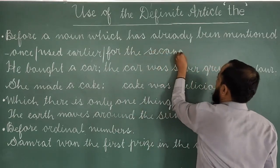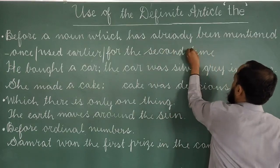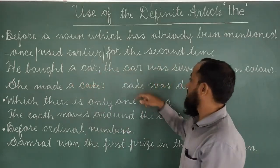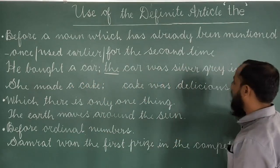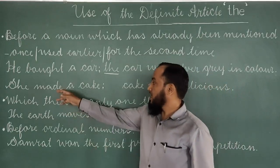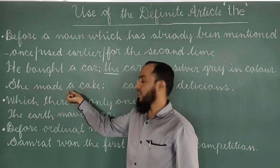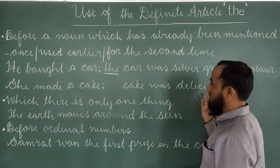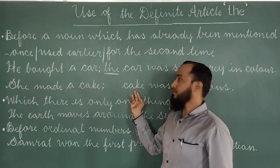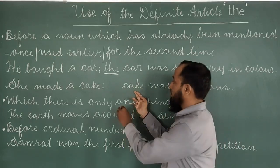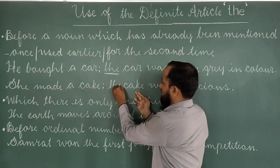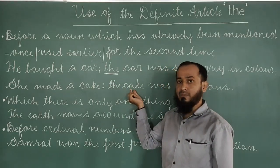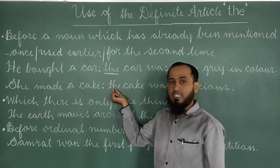For the second time we use the definite article 'the'. So: 'He bought a car. The car was silver gray in color.' Next example: 'She made a cake' — 'cake' starts with a consonant sound so we use 'a'. Then 'The cake was delicious' — 'cake' is used a second time, already mentioned before, so we use 'the'.